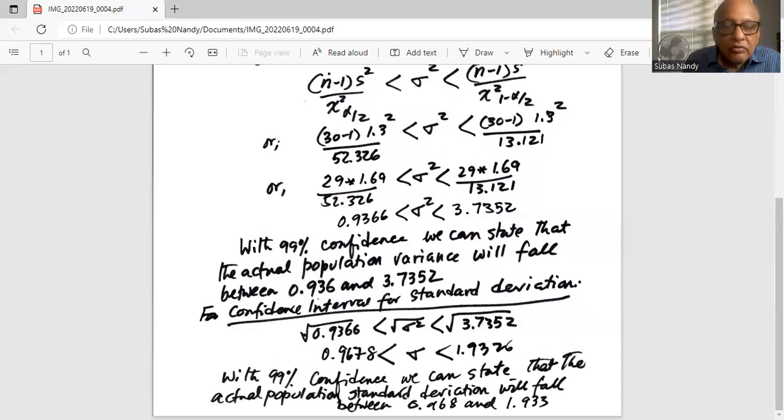So what do these two numbers mean? With 99 percent confidence we can state that the actual population standard deviation will fall between 0.968 and 1.933.